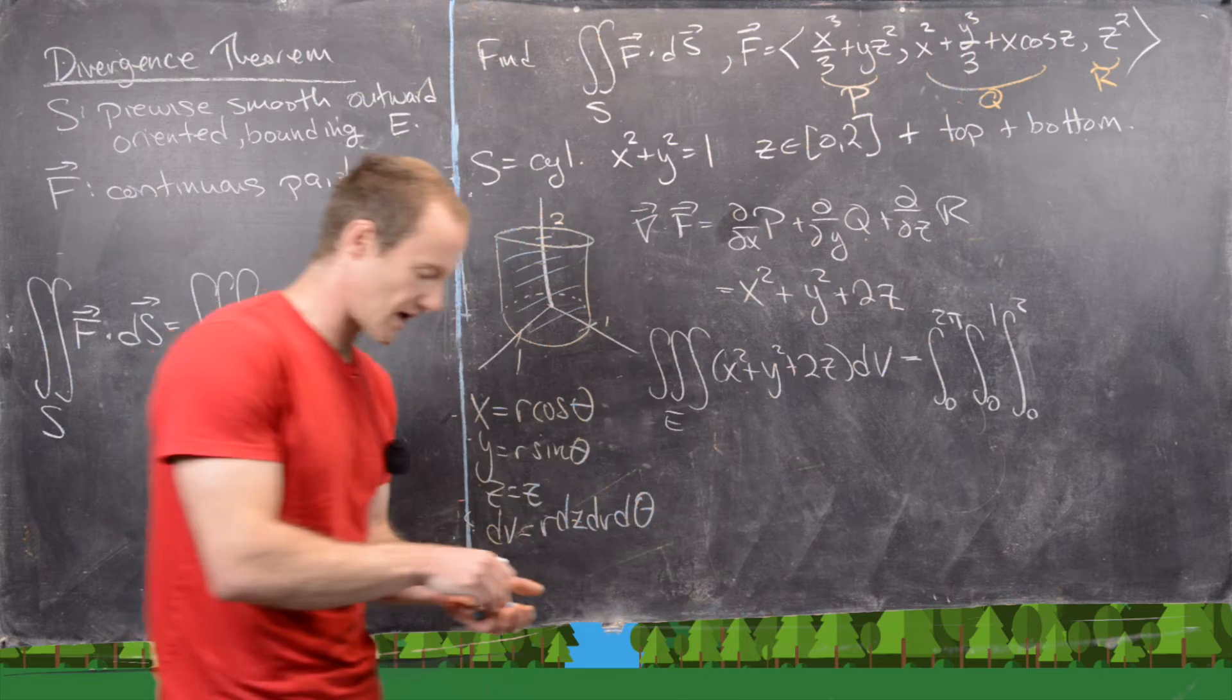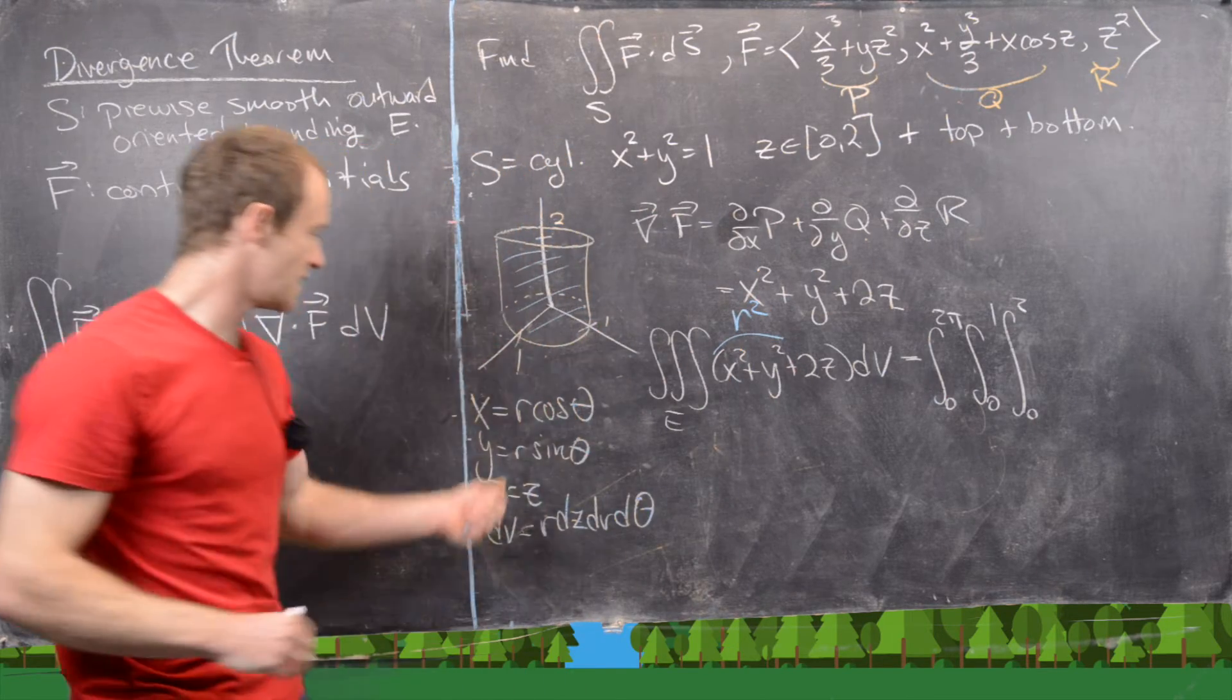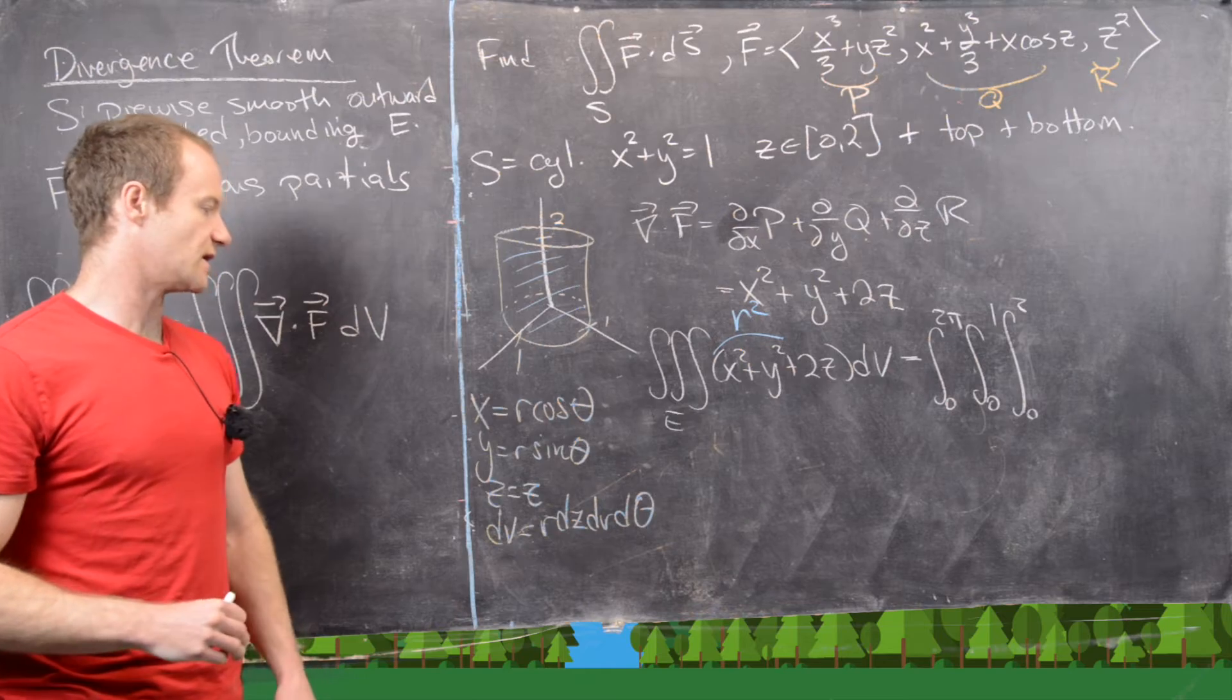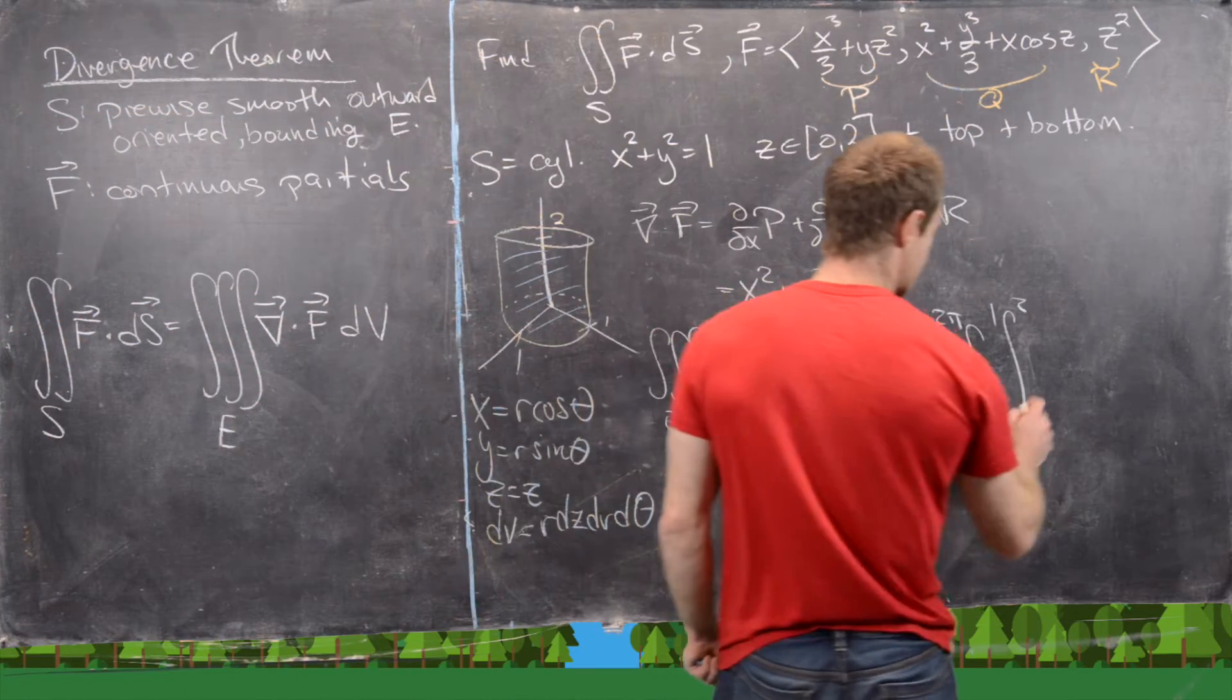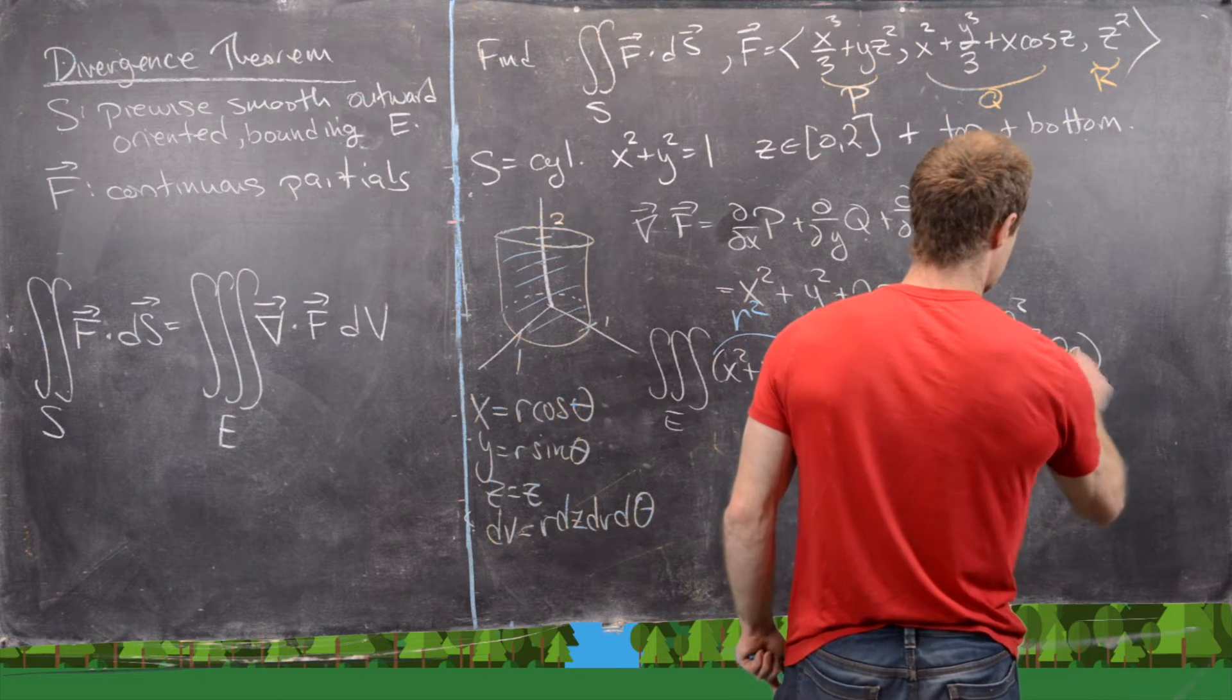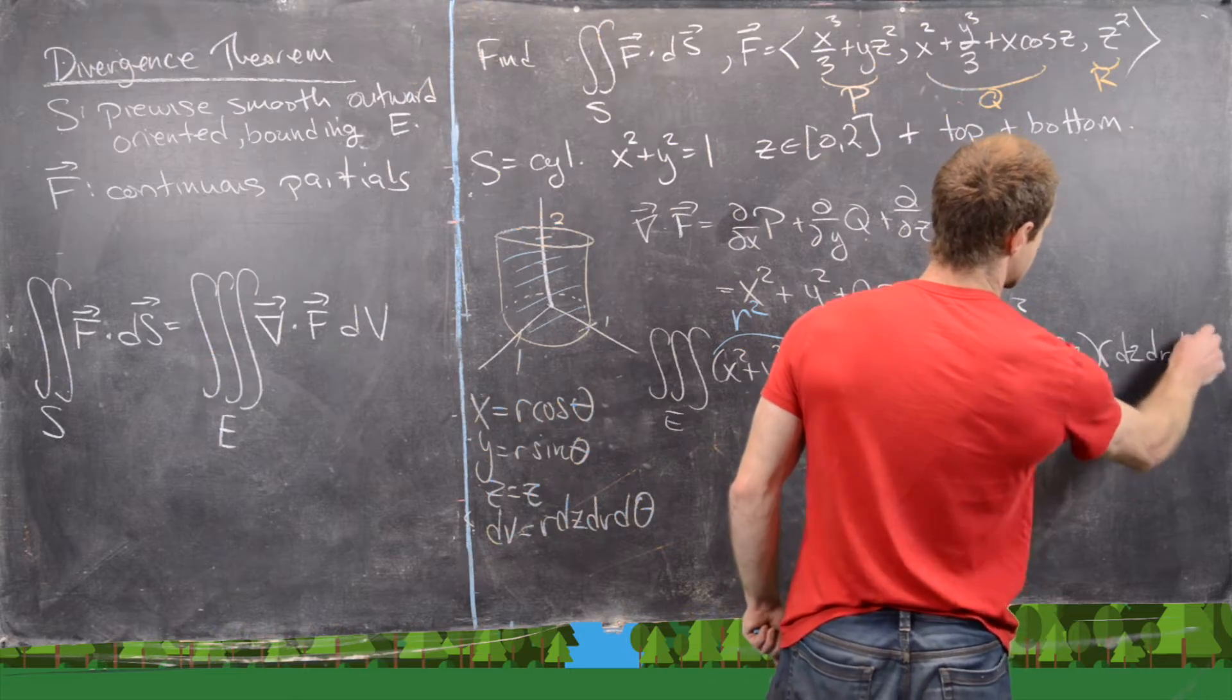And then we've got this x squared plus y squared, but we know x squared plus y squared is equal to r squared, because it's r cosine r sine. So that's pretty easy to see. And then we're going to have 2z. So we've got r squared plus 2z, and now this is going to be r dz dr d theta.